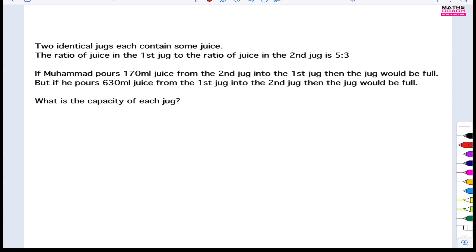The ratio of juice in the first jug to the ratio of juice in the second jug is 5 to 3. If Muhammad pours 170 milliliters of juice from the second jug into the first jug, then the jug would be full. But if he pours 630 milliliters of juice from the first jug into the second jug, then that jug would be full.